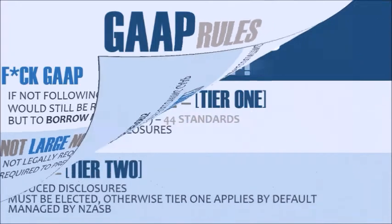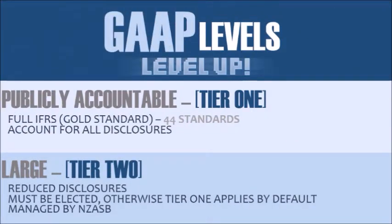GAAP has a two-tier system. Tier 1 comprises full IFRS for publicly accountable entities — this is the gold standard, and they have to account for all the disclosures. Tier 2 has reduced disclosure IFRS for entities that are not publicly accountable yet are large. Tier 2 must be elected while Tier 1 applies by default. Large entities can elect to go to Tier 2; if not elected, they are automatically in Tier 1. Small businesses do not have to follow GAAP at all unless they are publicly accountable.